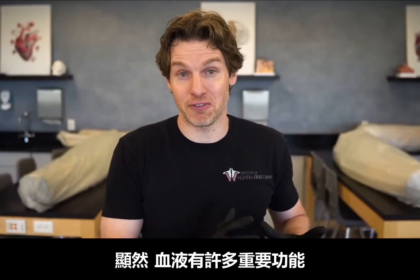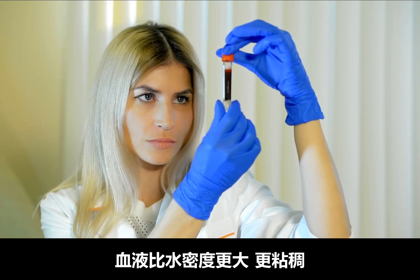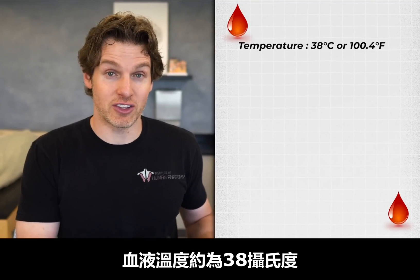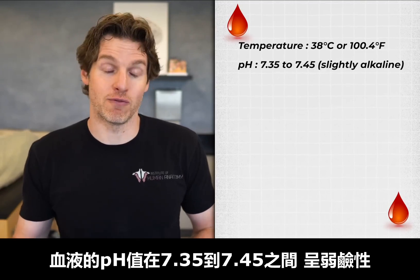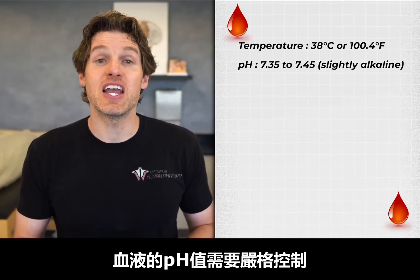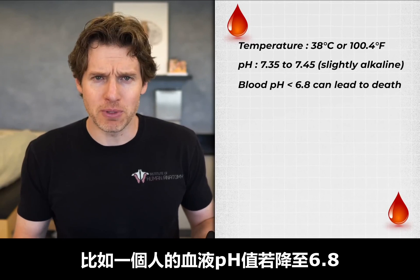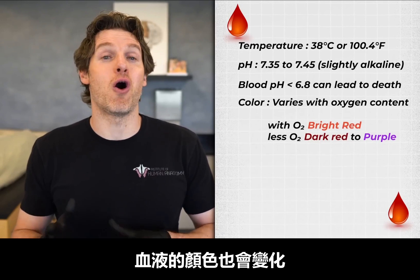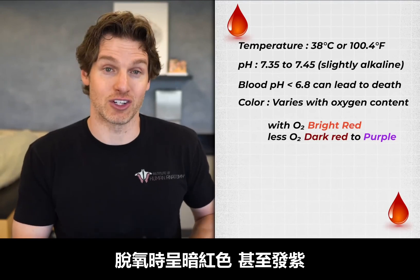There are many vital functions of blood, but what are some of the physical characteristics? Blood is denser and more viscous than water, flowing more slowly through the body. It has a temperature of about 38 degrees Celsius or about 100.4 degrees Fahrenheit, and it has a slightly alkaline pH of 7.35 to 7.45, which needs to be tightly regulated — deviations can be quite serious. If someone's blood pH went to 6.8, that would likely result in death. Blood color also varies: it's bright red when oxygenated and dark red to purplish when deoxygenated.